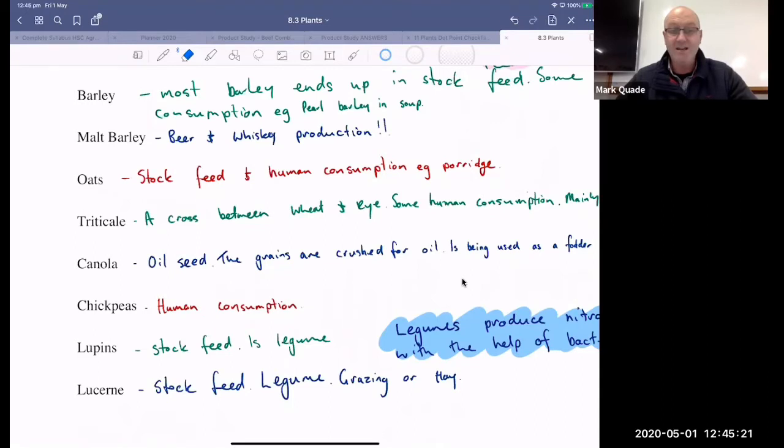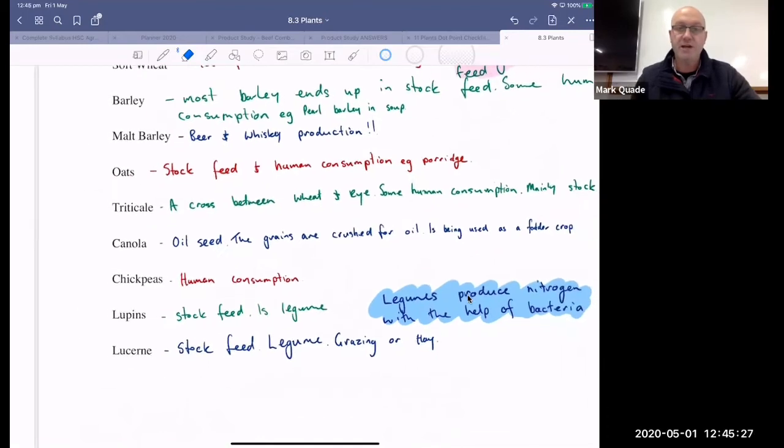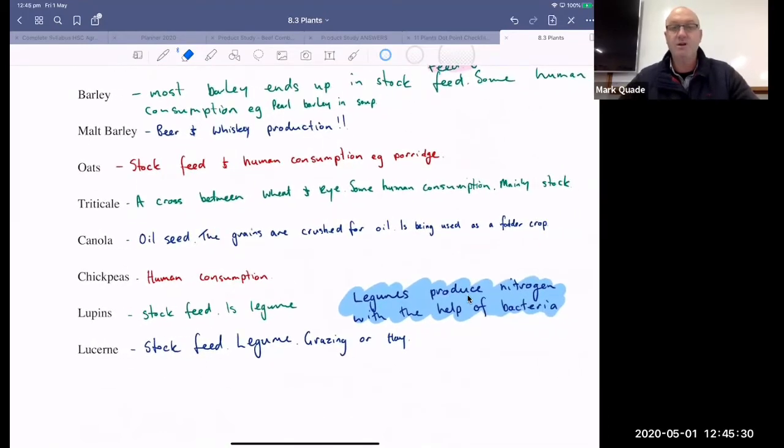Triticale, which is a hybrid. So it's a wheat and rye cross. There is some human consumption of triticale, but most of it goes into stock feed. It's got really high yields. So it's a great stock feed.